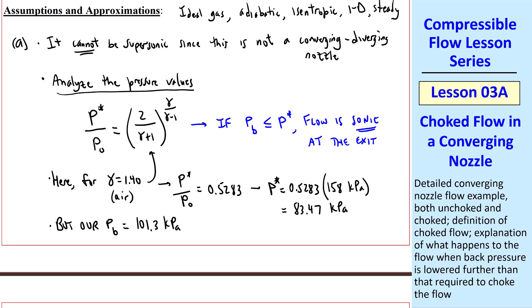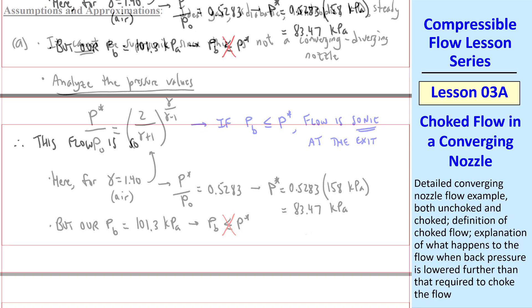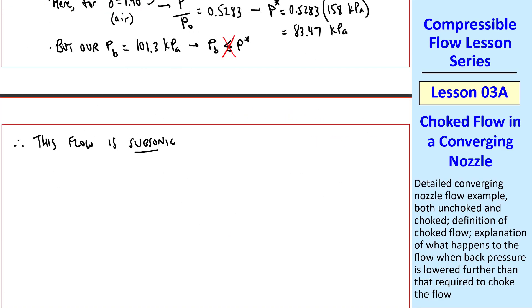But our back pressure, Pb, is 101.3 kPa, standard atmospheric pressure. And comparing these two, our Pb is not less than P-star. Therefore, this flow is subsonic at the exit plane. In fact, this flow is subsonic everywhere.